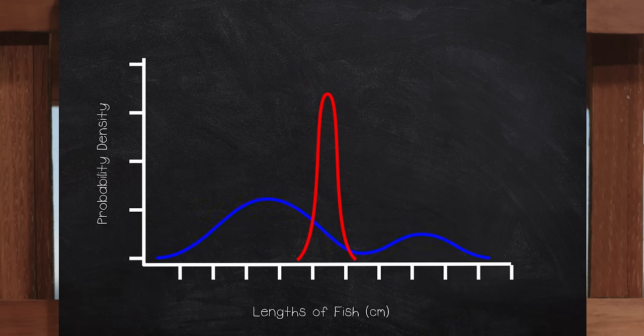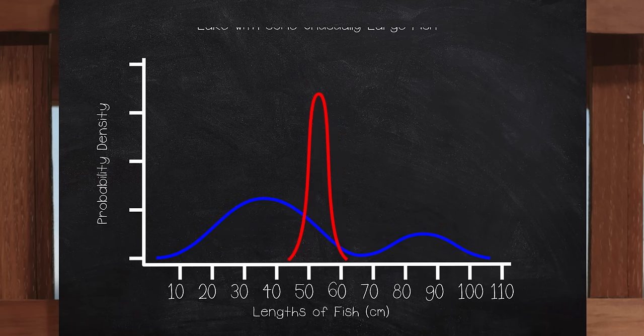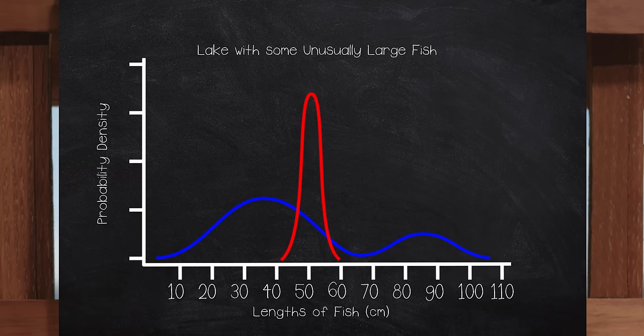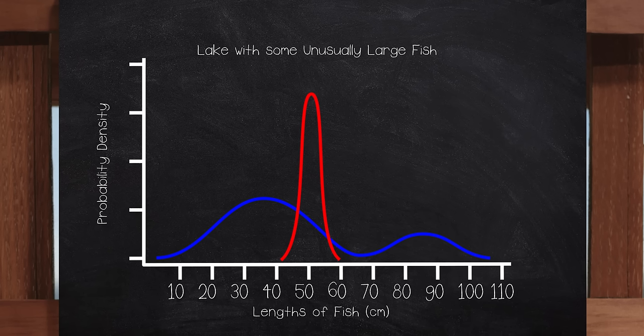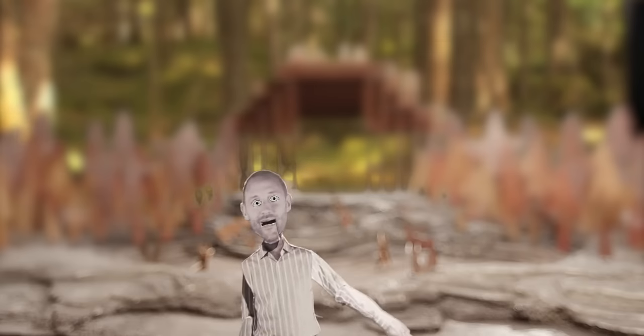Like, in a different lake with an unusual proportion of large sea creatures. This here, the set of all possible means would still be normal and bell-shaped, as long as our sample size is large. Now, that's pretty cool.